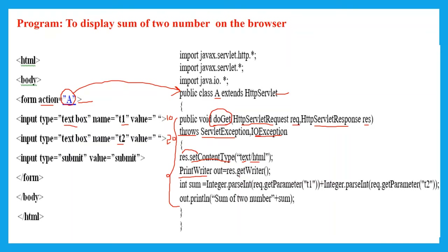To write content to the browser, we use the getWriter method. The getWriter method belongs to the response interface because it writes to the browser. The return value of the getWriter method is assigned to a PrintWriter class object — here, 'out' is the object of PrintWriter.